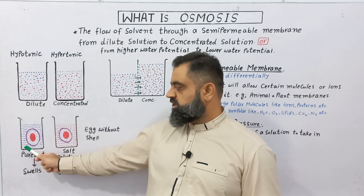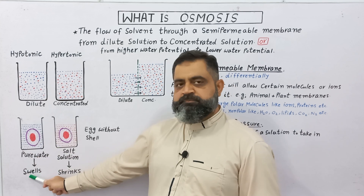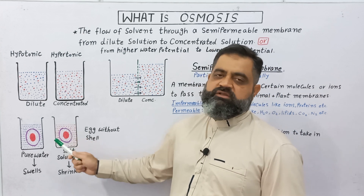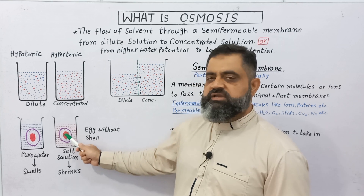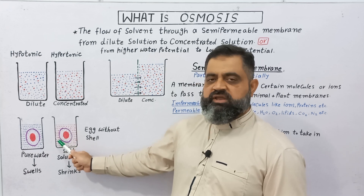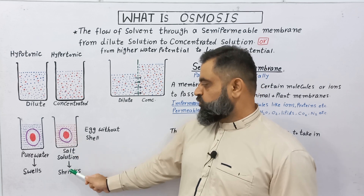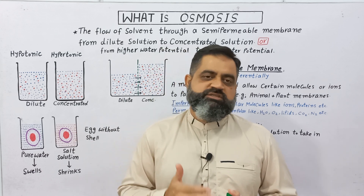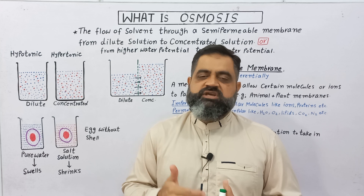So water moves from outside into the egg and as a result the egg swells. In the other experiment, water moves out from the egg — known as exosmosis — because the water potential inside the egg is greater than outside. So water leaves the egg and enters the salt solution; as a result, the egg shrinks. Both endosmosis and exosmosis can take place in living organisms from one cell to another.